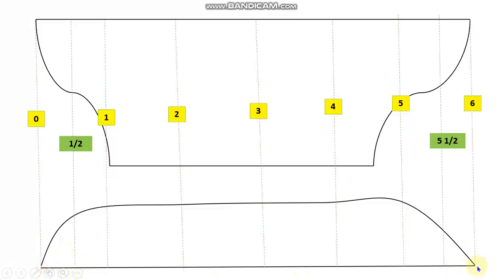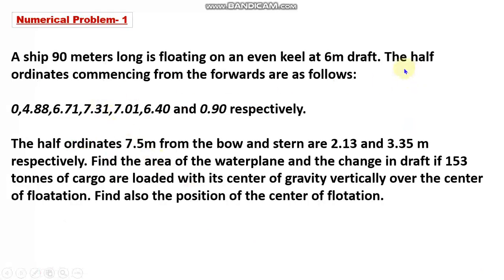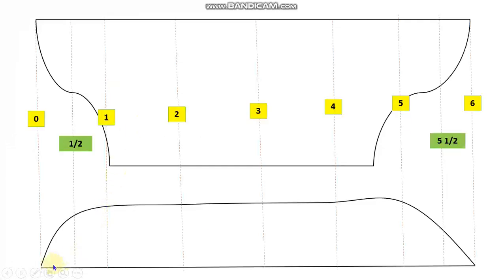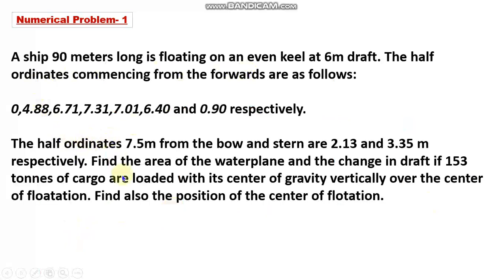Only half the section of the vessel is taken because the port and starboard halves are mirror images. If we calculate the area of one half and multiply by two we get the actual area, so only one half is needed. That is why the data is given as half ordinates — the height of the half section only. That is the idea behind half ordinates.